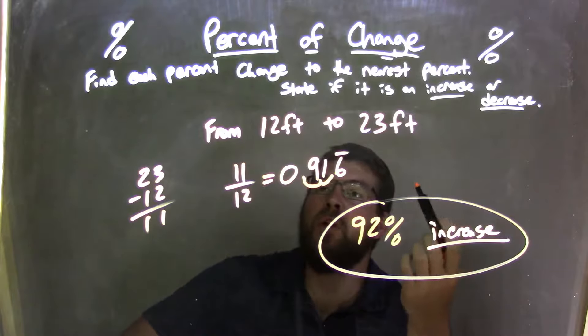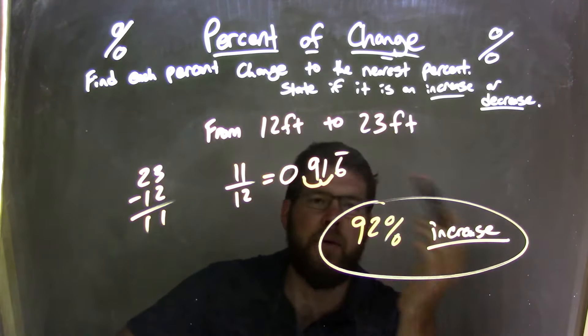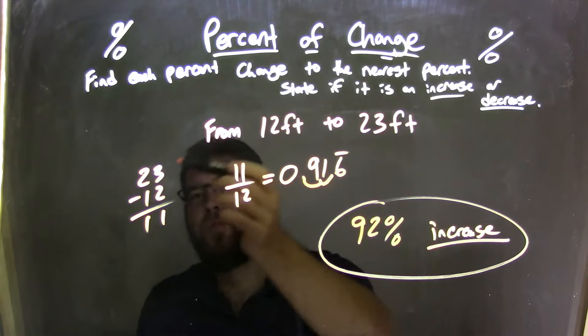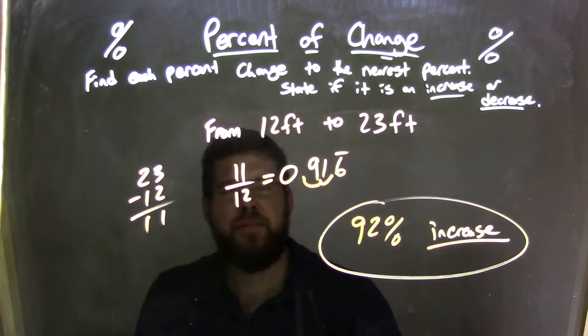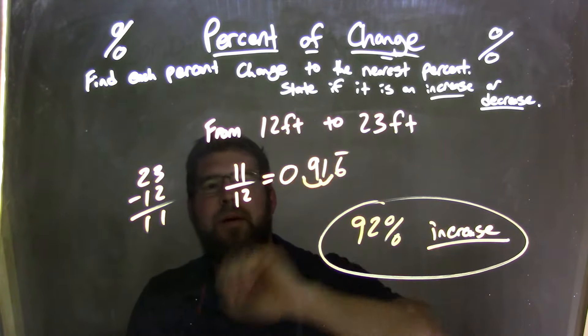So let's recap. We started from the problem from 12 feet to 23 feet. We knew that was an increase, going up. Now we find the difference between these two numbers: 23 minus 12 is 11. We take that number, divide it by our first number, 12. 11 divided by 12, we got a decimal.